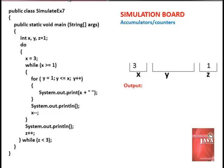The for loop assigns an initial value of 1 to variable y. It validates the condition y less than or equal to x. Y is 1 and x is 3, so the condition is true. The program implements system.out.print x plus space, printing the current value of x, which is 3, followed by a space.